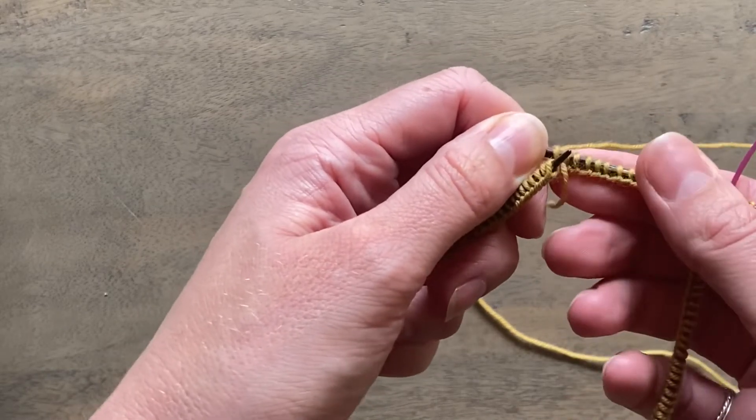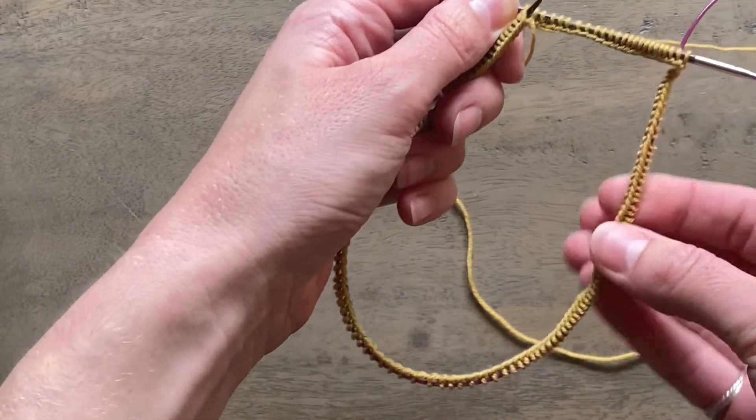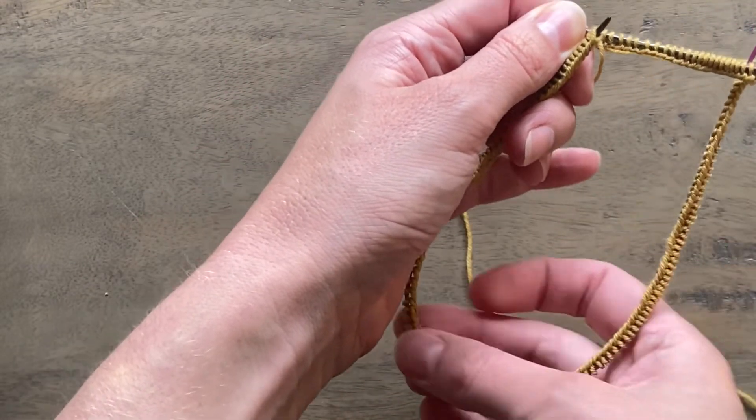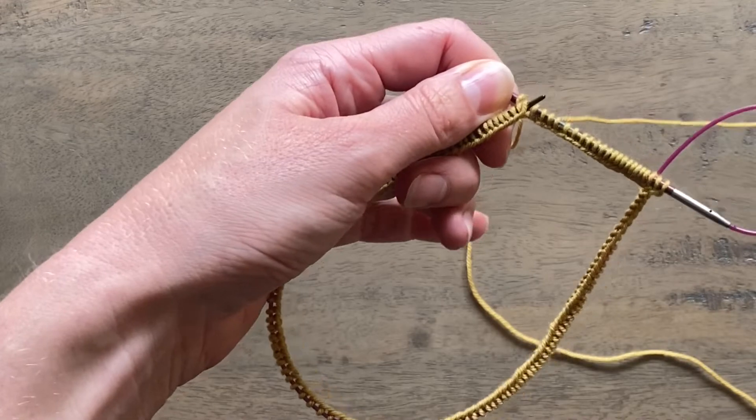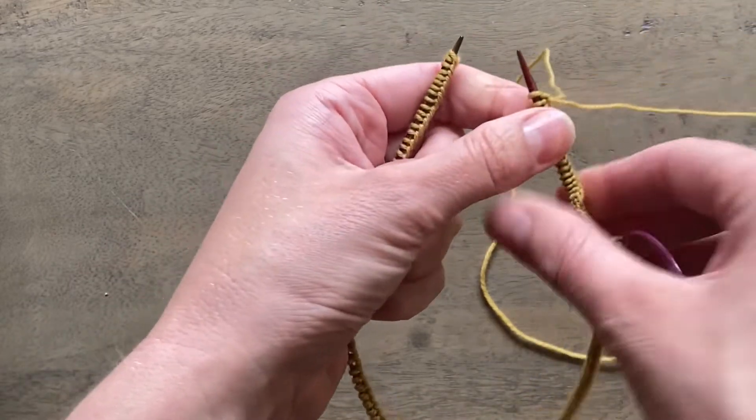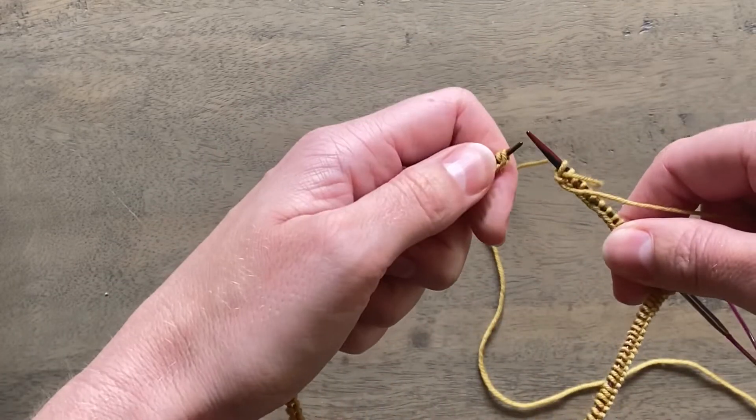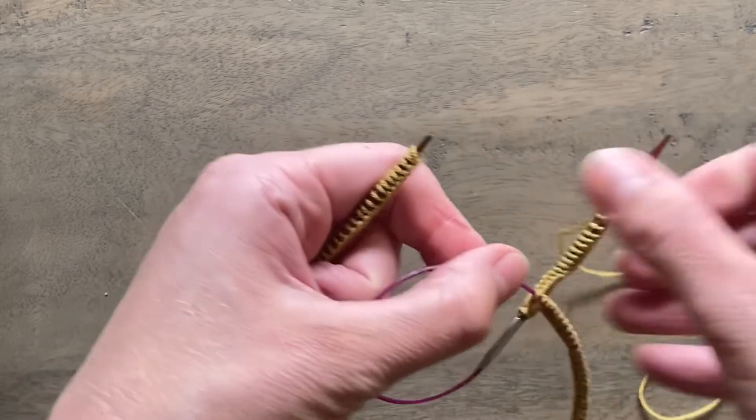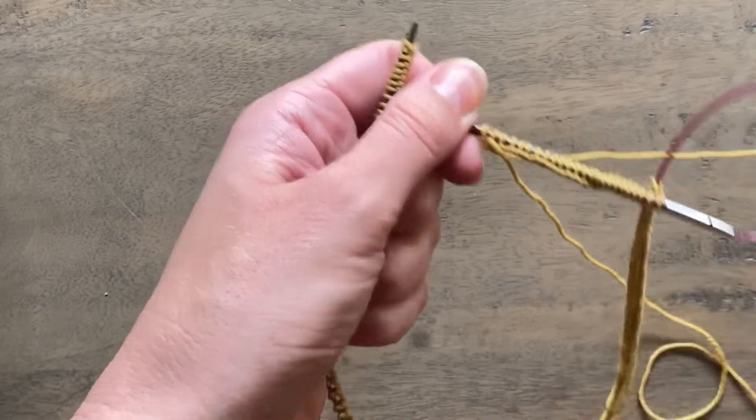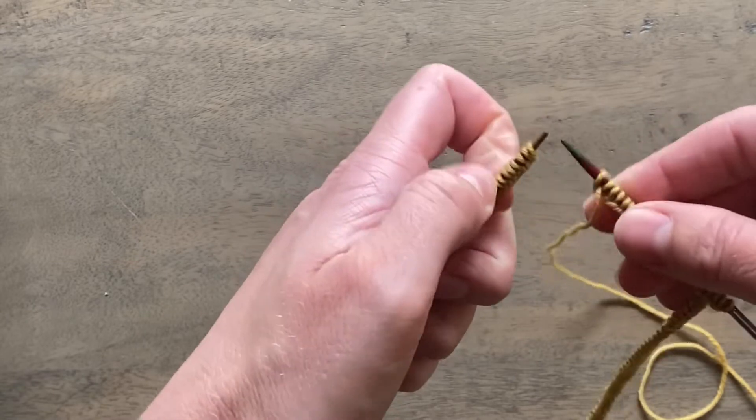So make sure first of all that there are no twists in your stitches at all. If you have this needle twisted round like this, stitches will twist every round that you work and you'll have to restart which is very annoying.